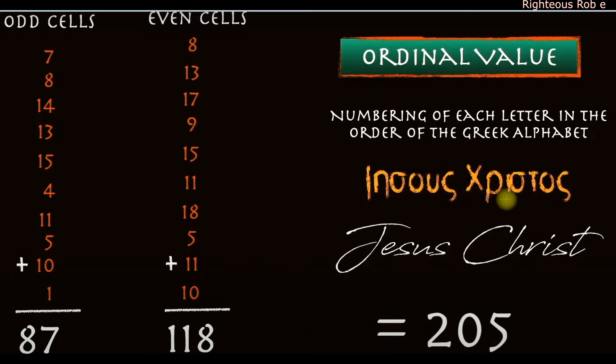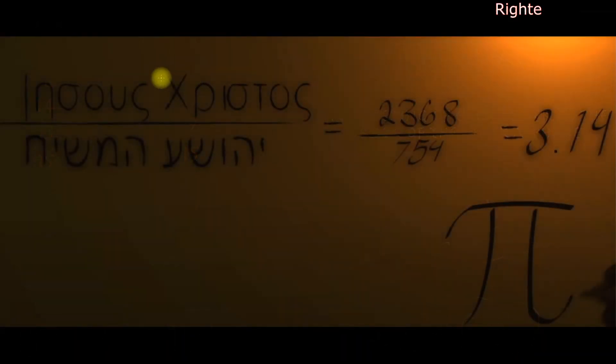Jesus Christos in Greek, Jesus Christ—the original Greek letter value sum total is 205, which is 87 plus 118. The odd cells of the matrix of amino acid side chains and the even cells sum totaling to 205, the ordinal value of Jesus Christ in the Greek alphabet.